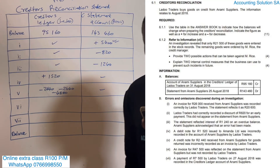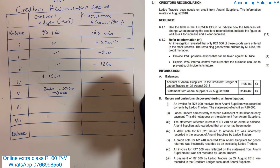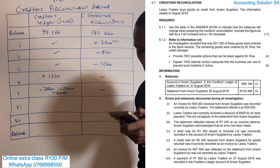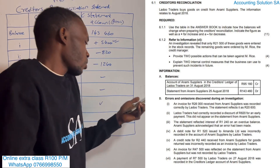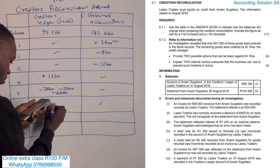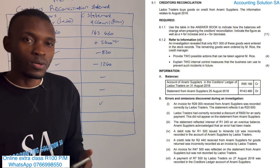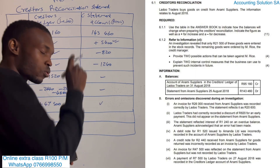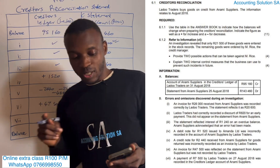Number six: an invoice of 47,500 was reflected on the statement from Army supplier but was not recorded by Ladu. It was on the supplier's statement - that side is fine - but in our books we never recorded it. What do we do? Invoice means purchased; we increase the liability. It must be plus 47,500 in our books. Invoice is purchased on credit, and when we purchase on credit we are increasing liability, so it shows plus.